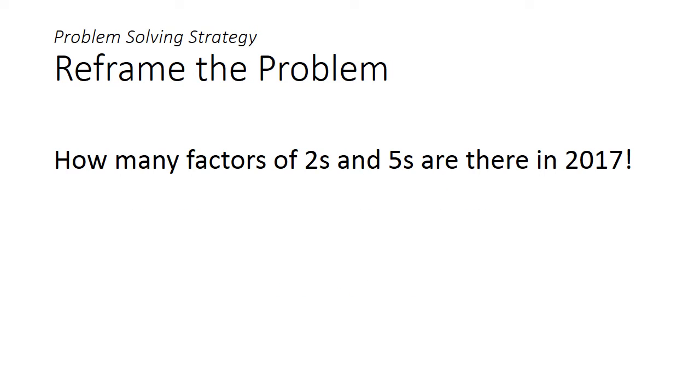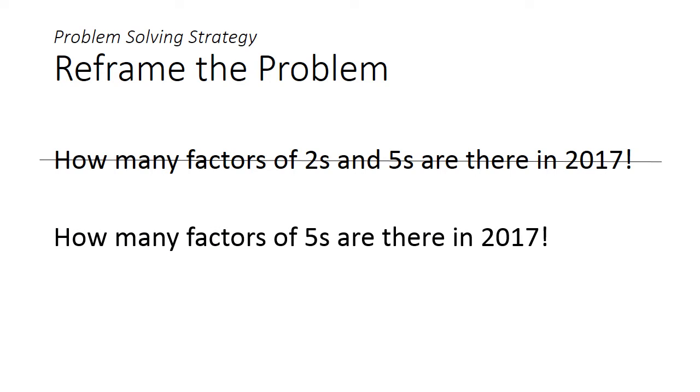The problem is then reduced to how many factors of 2s and of 5s are there in 2017 factorial. To further simplify the problem, we can ignore the factors of 2s because they occur just far more commonly than the 5s. We will just look at the factors of 5s.